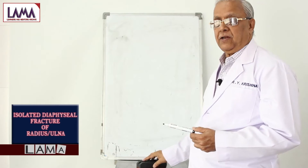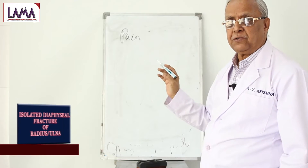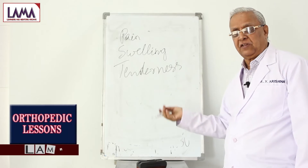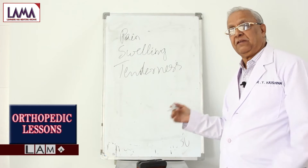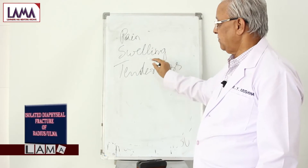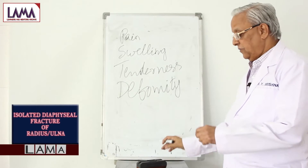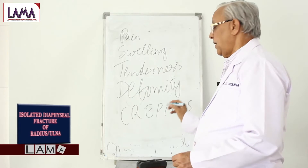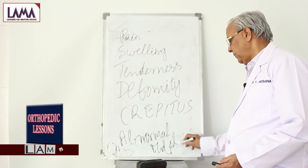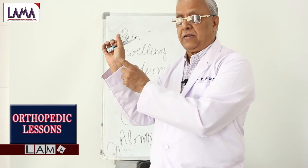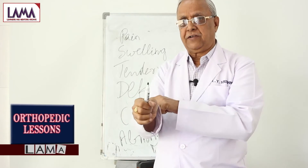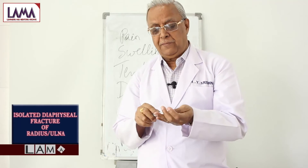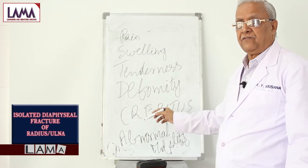The signs and symptoms include pain, swelling, tenderness, and deformity — all classical symptoms will be there if both bones are fractured. When the two fragments rub against each other, they produce a noise we call crepitus, and there will be abnormal mobility. Abnormal mobility refers to movement felt between the fracture fragments, as normal movement is supposed to take place only at the wrist or elbow. All these classical signs are seen in fractures of both bones of the forearm.